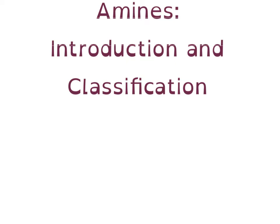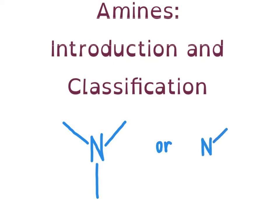Let's make sure we're all clear on the definition of what an amine functional group is. When we refer to an amine, we're referring to a nitrogen-containing compound that will have three covalent bonds — either three bonds to three different atoms, or two bonds to the same atom and one bond to another. The nitrogen will also have a lone pair of electrons so that it has a complete octet.